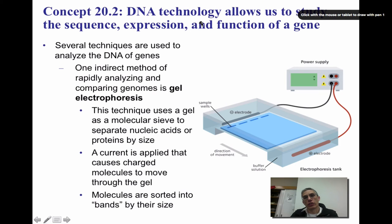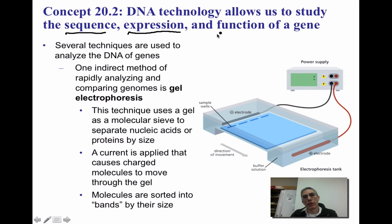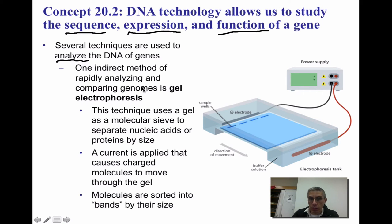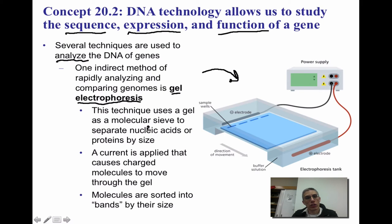DNA technology has allowed us to study the sequence, expression, and function of a gene. There are several different techniques that can be used to analyze these DNA fragments or the DNA of these genes. One indirect method of rapidly analyzing and comparing genomes is using a process called gel electrophoresis—you can see the apparatus right over here. This technique is going to use a gel as a molecular sieve, straining those nucleic acids or possibly those proteins based on size.